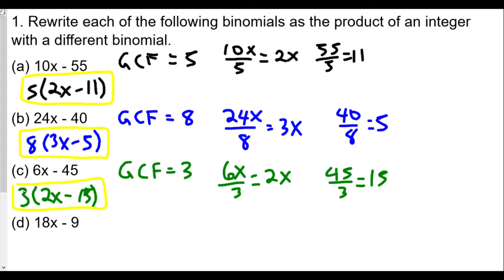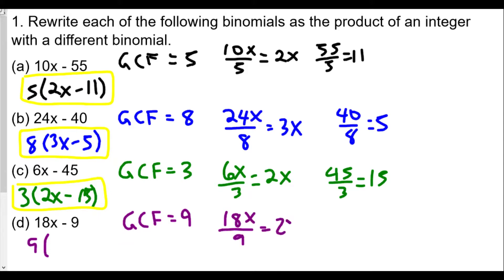For part (d), the GCF for 18x − 9 is 9 — and yes, the GCF can be one of the numbers themselves. Dividing: 18x ÷ 9 = 2x, and 9 ÷ 9 = 1, not 0. So the factored form of 18x − 9 is 9(2x − 1).